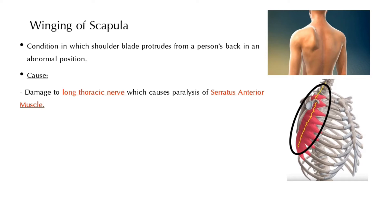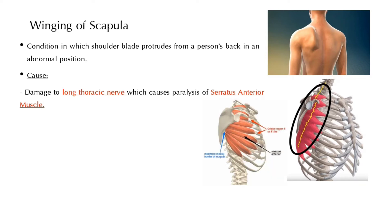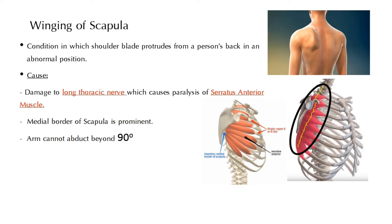Normally, the serratus anterior muscle attaches to the medial anterior aspect of the scapula and anchors the scapula against the ribcage. But when this muscle gets paralyzed, it is unable to anchor the scapula against the ribcage, resulting in winging of the scapula. Also in this case, the arm cannot abduct beyond 90 degrees.